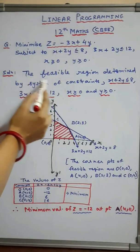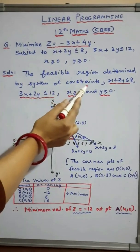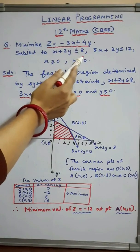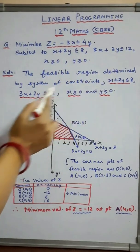Linear programming. The feasible region determined by the system of constraints x + 2y ≤ 8 and 3x + 2y ≤ 12.